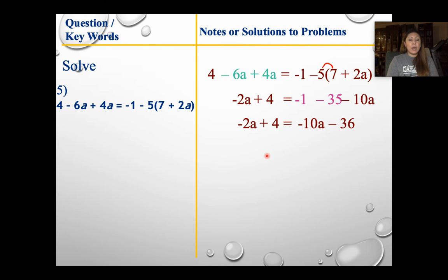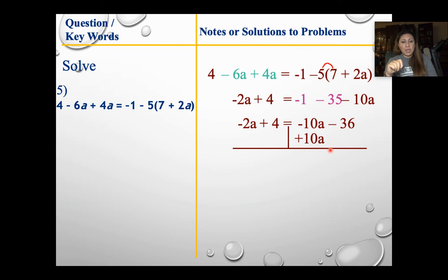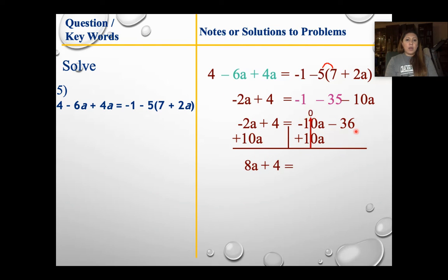Can I add negative 36 and negative 10a? No. So now I do my upside down T and move my variable. Be very careful — which one is smaller, negative 2a or negative 10a? It's actually negative 10. Think of it like owing money — you'd rather owe $2 than $10. So I'm going to add 10a to both sides. Different signs, subtract. 10 minus 2 gives me 8a, positive because 10 is bigger. Bring down the 4, then bring down negative 36.